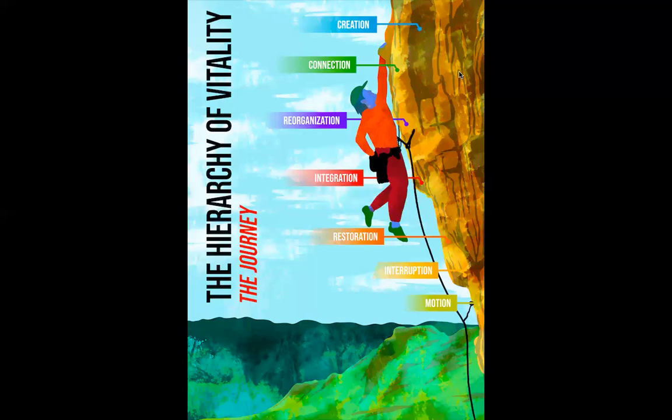So the next zone, we're going to jump up to connection. But let's talk integration and reorganization. Integration is getting all the parts of the body working together. Row boats, left side, right side. The guys have to work together.